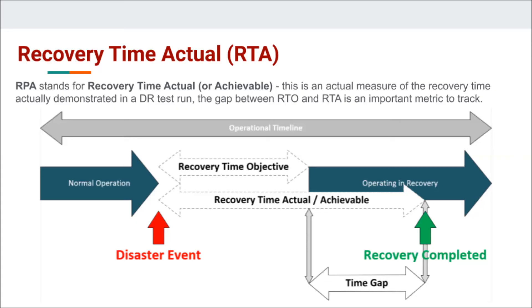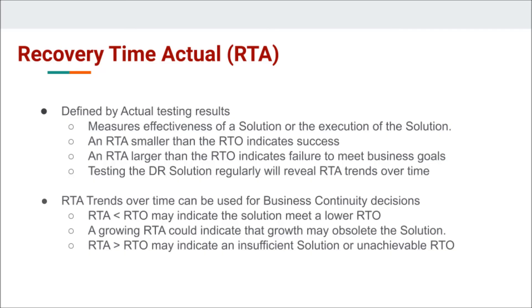When we put all this into practice, we come up with a third metric — the Recovery Time Actual, or Recovery Time Achievable, depending on how you prefer. This is an actual metric rather than a requirement — it's an actual measure of the recovery time demonstrated in a disaster recovery test run. The important thing is the gap between the recovery time objective and this RTA. It's an important metric to track because it gives you the health of your recovery solution. Your RTA is defined by testing results and measures the effectiveness of your solution or its execution. An RTA smaller than the RTO indicates a successful test and that you're within your RTO; an RTA larger than the RTO indicates a failure to meet business goals. If you test your DR solution regularly, you should be able to trend your RTA over time and see if it's increasing or decreasing.